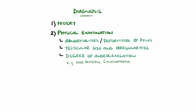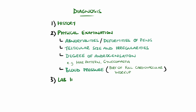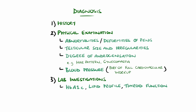Blood pressure should also be checked as part of the cardiovascular workup. Further investigations can include bloods such as HbA1c and fasting glucose, lipid profile and thyroid screen. A morning serum testosterone and prolactin may also aid in identifying hypogonadism in the setting of reduced libido.